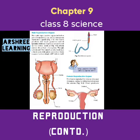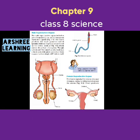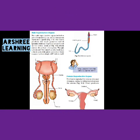The first reproductive system in your syllabus is the male reproductive system. We will read about the two types: male and female reproductive organs. The male reproductive system consists of the male main organ which differentiates a male from a female. It has a pair of testes, which help in the production of the male reproductive cells called the sperm.